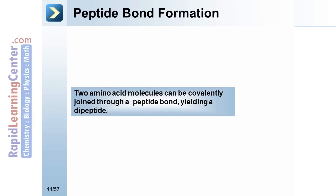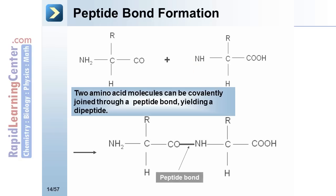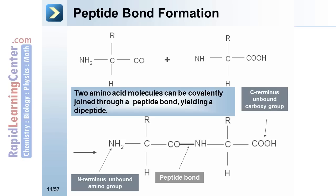Peptide bond formation. Two amino acid molecules can be covalently joined through a peptide bond, yielding a dipeptide. The N-terminus has the unbound amino group and the C-terminus has the unbound carboxyl group. The product is a dipeptide and this is a dehydration reaction.